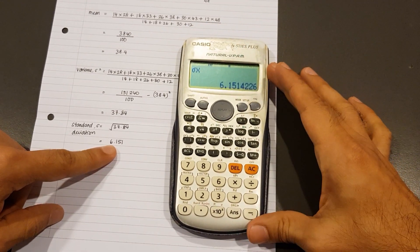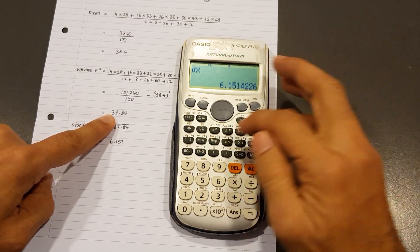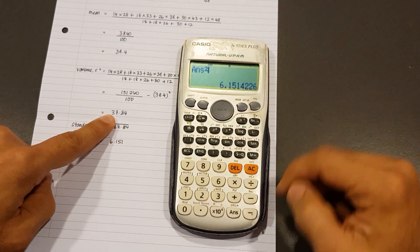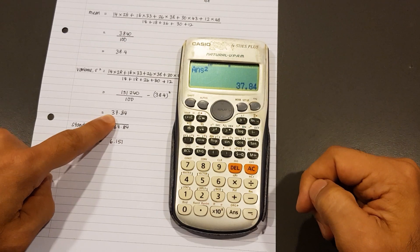Just as the older calculator, it will not give us the variance. To find the variance, which is 37.84, we square that, press equals, and there you have it - 37.84.